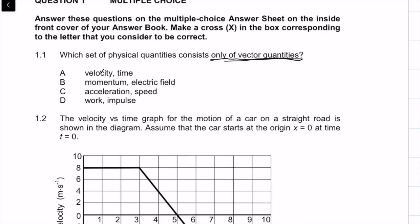Velocity is a vector but time is a scalar, so A can be gone. Momentum is a vector and electric field is a vector, so B is a possibility. Acceleration is a vector but speed is a scalar, so C goes out. Work is a scalar, so D goes out. So the answer to question 1.1 is B.